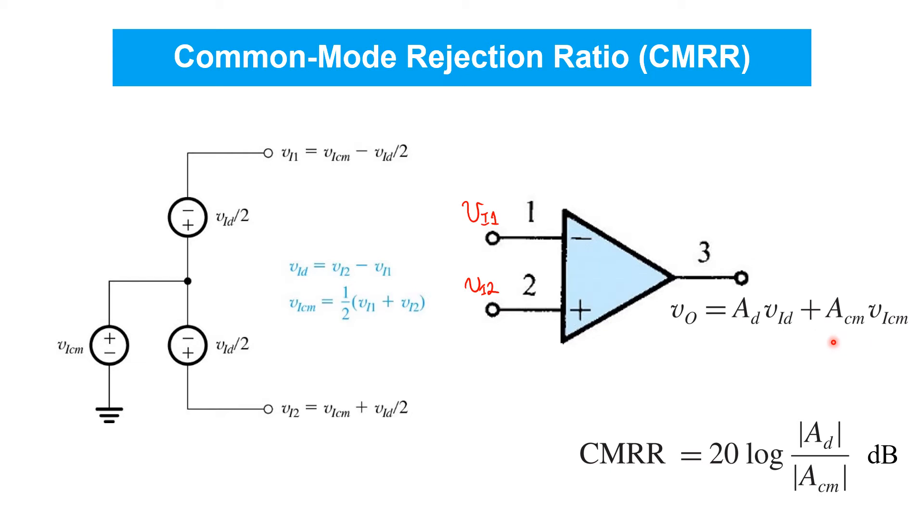Now, a good difference amplifier should predominantly depend on the difference, and so therefore, AD should be a lot greater than ACM. The common mode rejection ratio helps us to quantify this by taking the ratio of these two gains. Typically, it's expressed in dB as 20 log base 10 of the ratio.